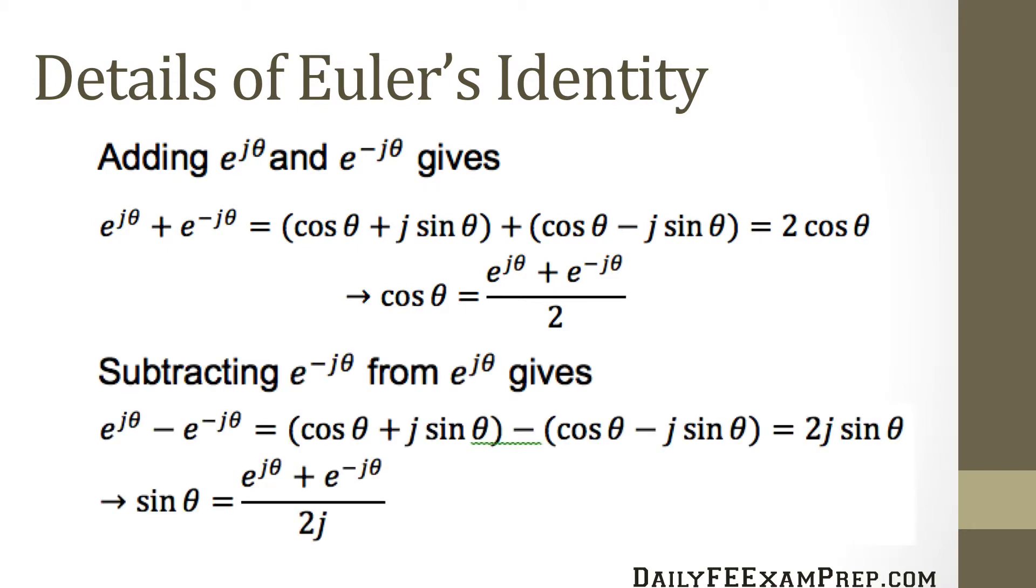Now, if we subtract e raised to the minus j theta from e raised to the positive j theta, that gives us the following definition, which is cosine theta plus j sine theta minus cosine theta minus j sine theta equals two j sine theta. And that gives us sine theta equals e raised to the j theta plus e raised to the minus j theta divided by two j.